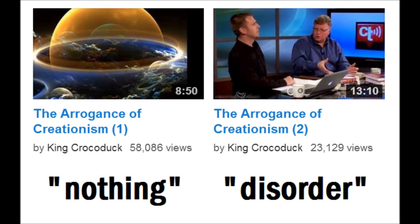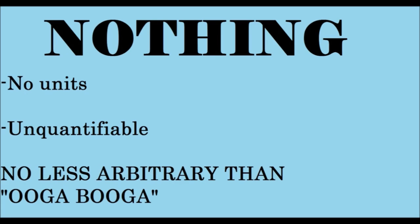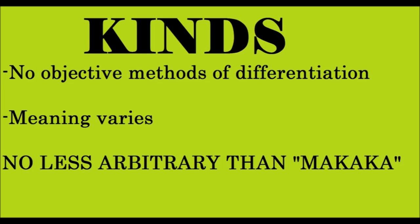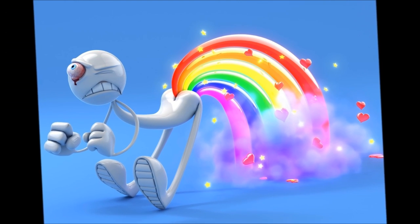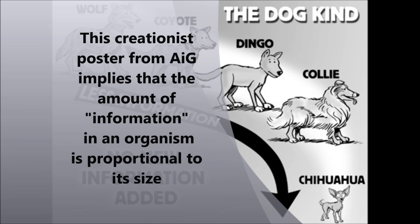A recurring theme in this series is the creationists' addiction to crafting arguments against well-established scientific principles by hinging their entire case on vague terminology. The problem with this, as we saw in the first two videos, is that unscientific terminology like 'nothing' and 'disorder' are vague and leave the door open to equivocation and goalpost shifting, inevitably leading to massive errors in the creationist's reasoning. A frequently cited example of this is the creationist's misuse of the word 'information,' which results in some common misconceptions.